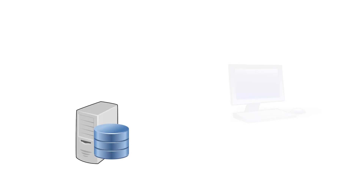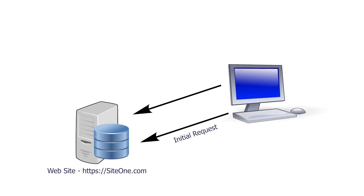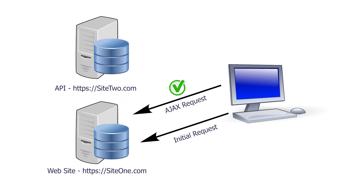CORS stands for Cross Origin Resource Sharing. This is a deliberate security policy applied by the browser and server in combination. If you have a simple website where your HTML pages and your web service reside on the same server at the same URI, that's permissible. But what we've got here is two separate URIs — the Angular app is on localhost:4200, and our API is at port 5001. These are completely separate sites as far as the system's concerned, so when we send a request from 4200 to 5001, it's just not allowed by default.